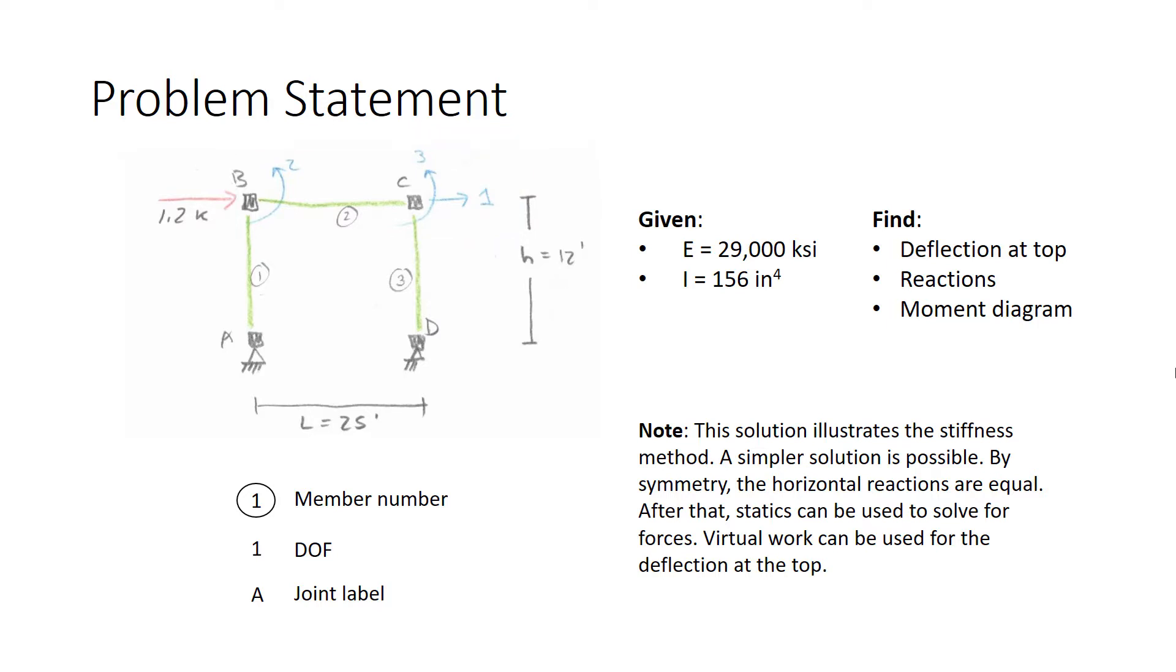Here, we're taking advantage of axial rigidity in the members to reduce the number of degrees of freedom, as well as the fact that ends A and D of the structure are moment-free ends. We have given values of modulus and moment of inertia, and our task is to find the deflection at the top, the reactions, and the moment diagram.